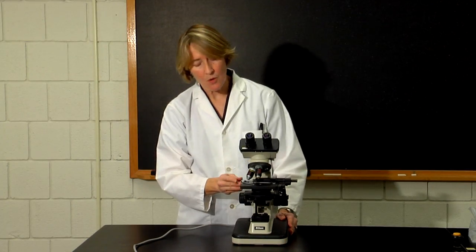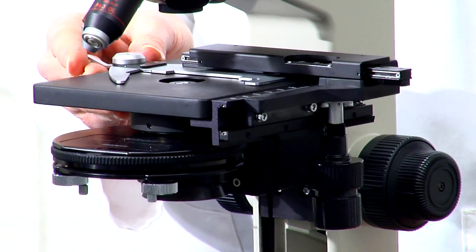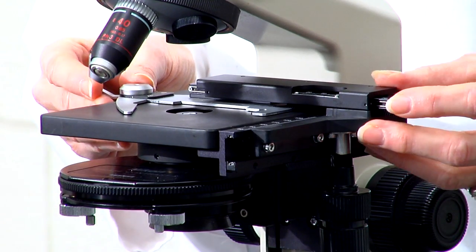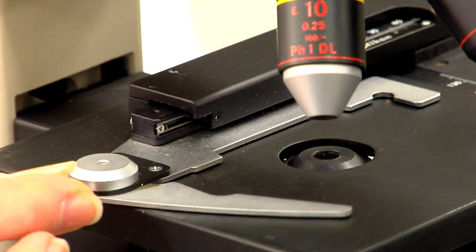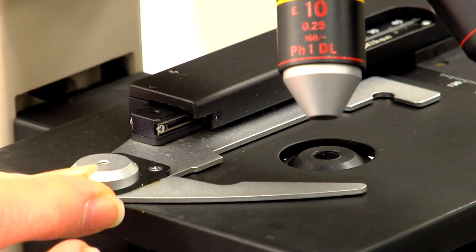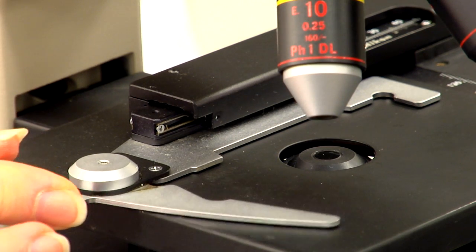Above the light source is the mechanical stage, which holds the specimen and which allows you to adjust the position of the slide. Notice that there's a metal clip. You should put the slide in the clip and make sure that the slide is secure.